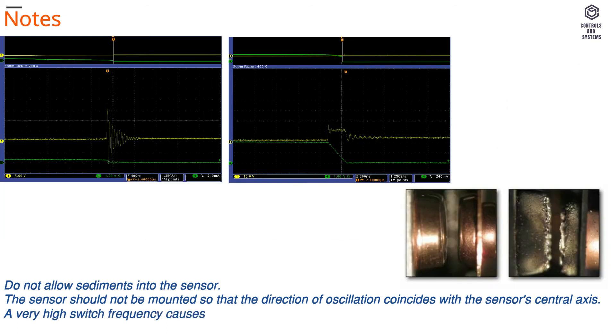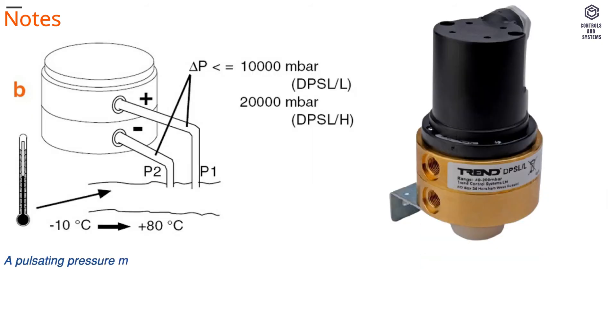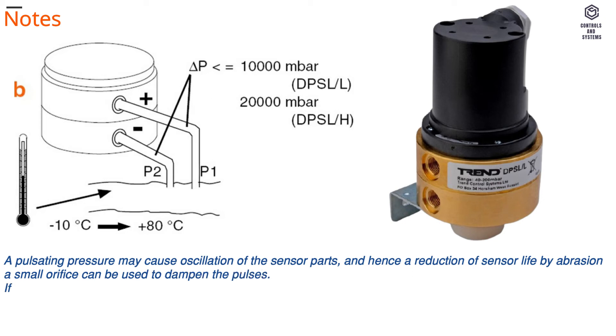A very high switch frequency causes the contacts to heat and hence reduces contact life. A pulsating pressure may cause oscillation of the sensor parts, and hence a reduction of sensor life. By abrasion a small orifice can be used to dampen the pulses.